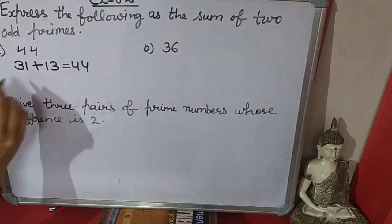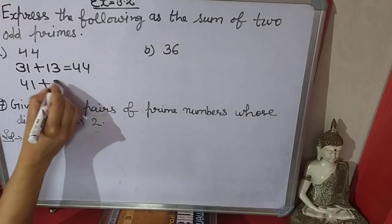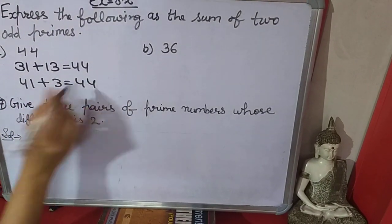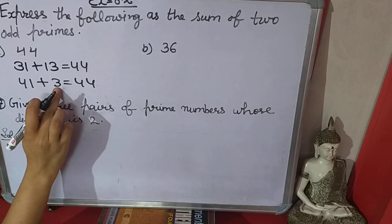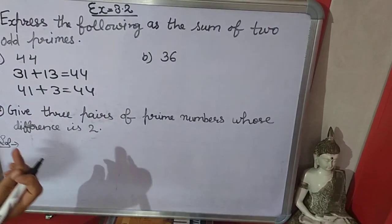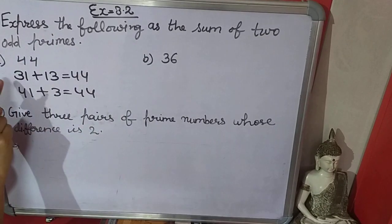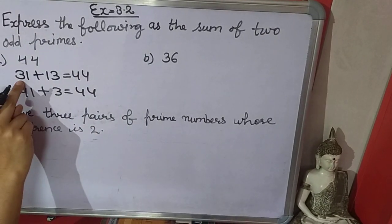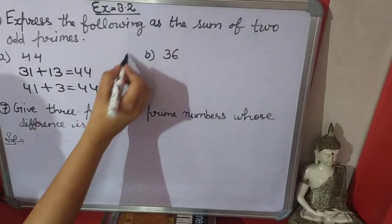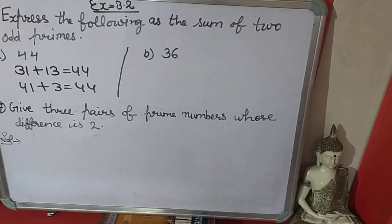You can take other numbers like 41 plus 3, which also equals 44. Both 41 and 3 are odd prime numbers. But the question says to write only one pair, so you can write only one pair. Now next is 36.